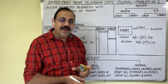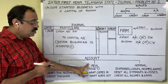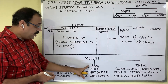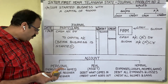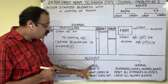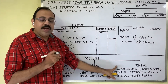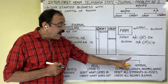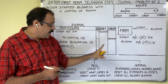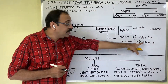Second step is grouping. Grouping means we should identify whether each account is a personal account, real account, or nominal account. Accounts are divided into three types: personal, real, and nominal. If any account is opened with a person name or firm name, it is a personal account. If an account is opened with an asset name, it is a real account. If opened with an expenditure, loss, income, or gain name, it is a nominal account. Cash is an asset, so it is a real account. Sudha's account is opened with a person name, therefore it is a personal account.